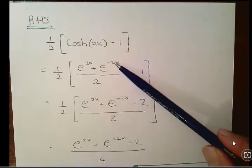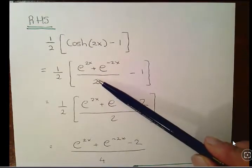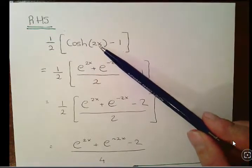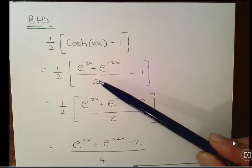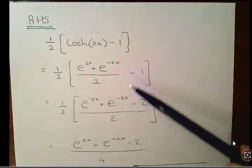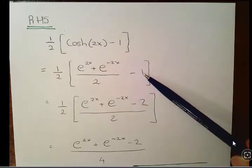Cosh(2x) is—well, cosh(x) is (e^x + e^(-x))/2—so rather than x here we have 2x, so we have (e^(2x) + e^(-2x))/2, and we have minus 1 there. What I'm going to do is re-express that 1 as minus 2/2, common denominator, so we can go from this here to this down here with the half outside.